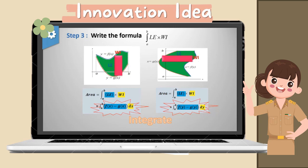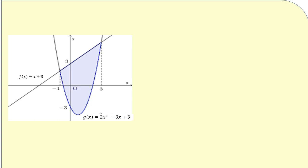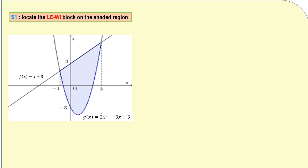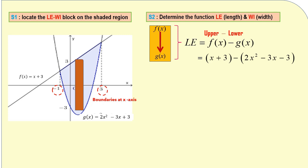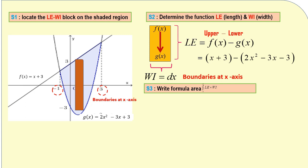Let me illustrate how to apply the Length Times Width Technique through real examples. First example: Step 1 — locate the Luwi block on the shaded region. Since we use the boundaries at the x-axis, x = −1 and x = 3, we locate the Luwi block vertically. Step 2 — determine the function length and function width. Based on the block, we notice that the upper function is f(x) and the lower function is g(x). So the length is f(x) − g(x) and the width is the small change of x, denoted as dx. Step 3 — write the formula for the area as the integral of length times width, and integrate it with respect to x to get the value of the area.